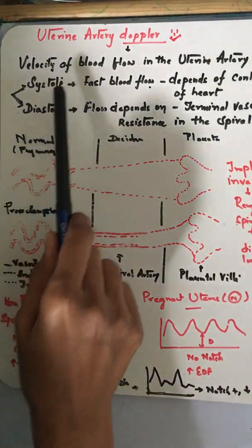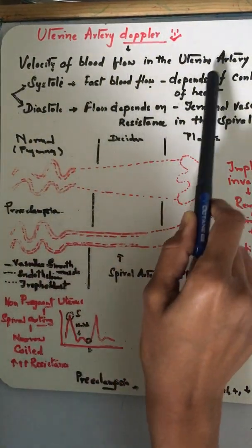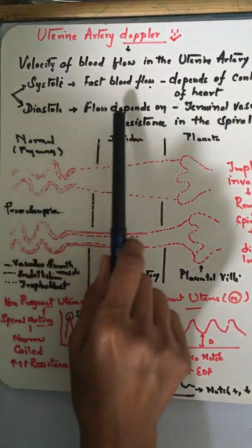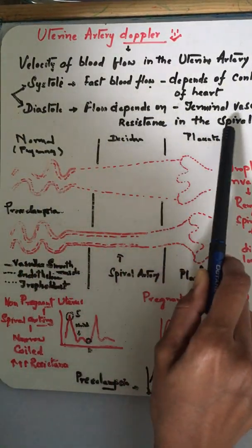What happens during systole and diastole? During systole, the fast blood flow in the uterine artery depends upon the contractility of the maternal heart. In diastole, the flow depends upon the terminal vascular resistance in the spiral artery.